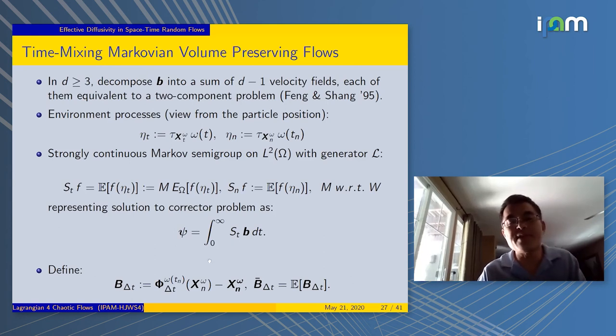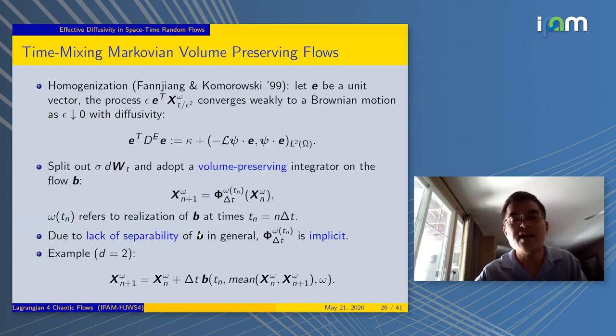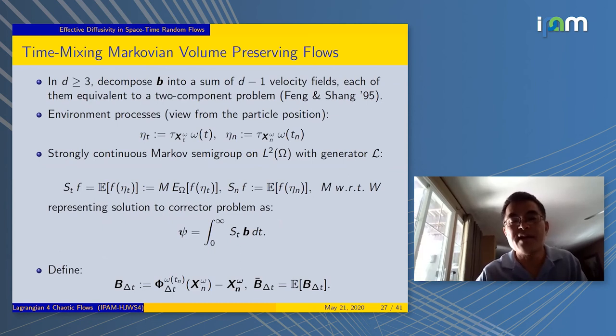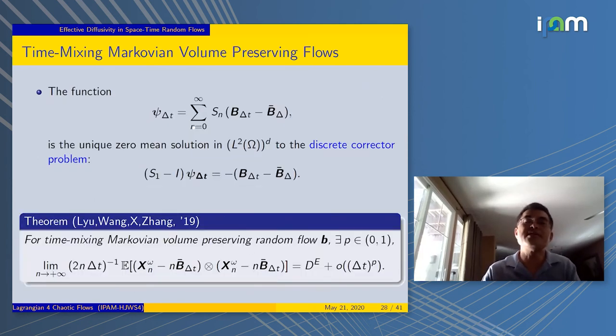The corrector has an integral representation in terms of this Markov operator S_t. Now we're going to do something very similar. Introduce the b_δt. That's the φ, the right-hand side of the discretization minus x. This is the discretized representation in terms of the S_n operator. It's very similar to the continuous case. You can show that this satisfies a mean zero solution of the discrete corrector problem.